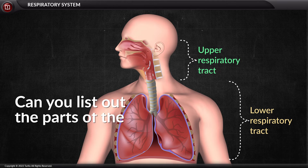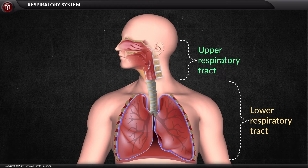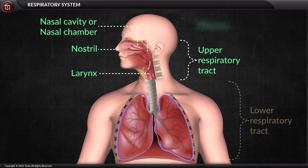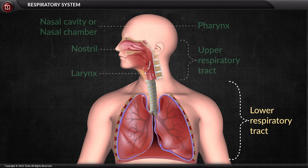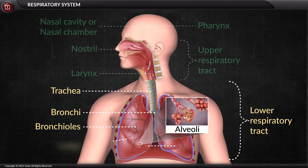The upper respiratory tract is made up of nostrils, nasal chamber, larynx, and pharynx. The lower respiratory tract includes the trachea, bronchioles, bronchi, alveoli, and lungs.